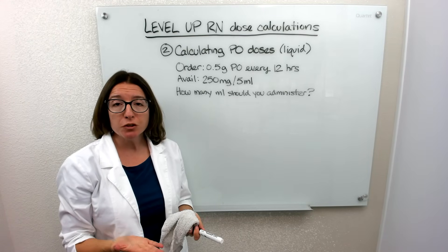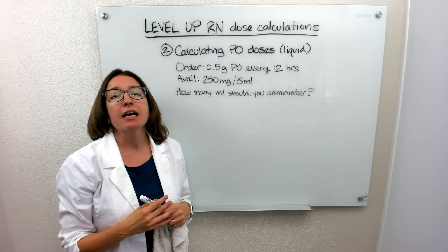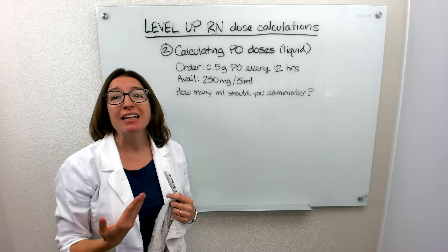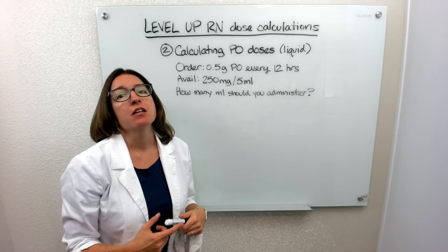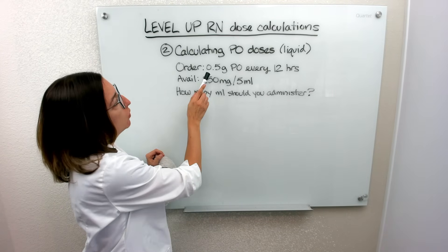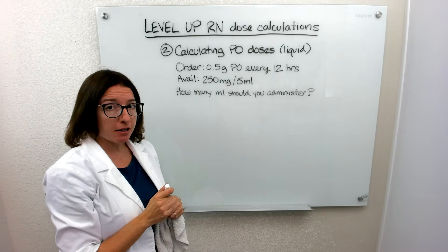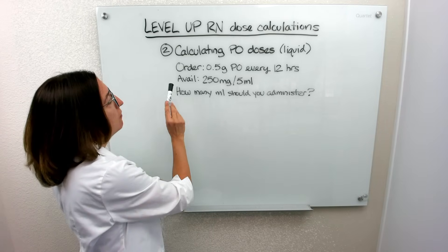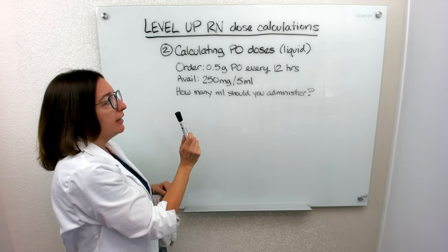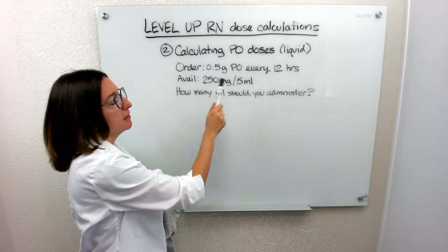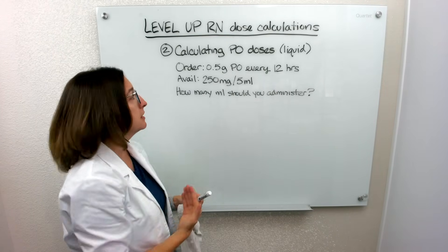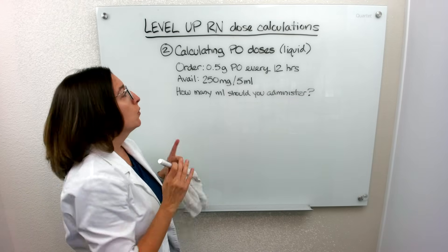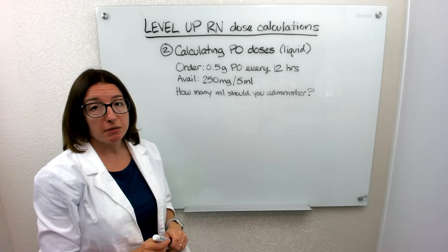Now I'm on problem 2. We are going to calculate an oral dose again, but this time we have an order for a liquid medication. In this particular case, we have an order for 0.5 grams of a liquid medication to be administered every 12 hours. What we have available is this medication at a concentration of 250 milligrams within 5 milliliters of liquid. The question is, how many milliliters should we administer?